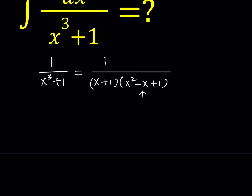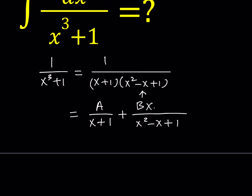So we're not going to factor it; we're just going to leave it as is and write this expression as A over x plus 1, because for partial fractions, if you have a linear expression at the bottom, you have a constant on top — they need to have a difference of 1 in degree. And since you have an irreducible quadratic at the bottom, your numerator is supposed to be linear, so we write it as Bx plus C.